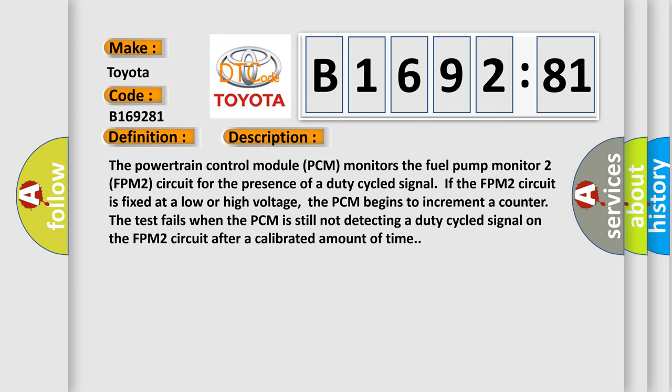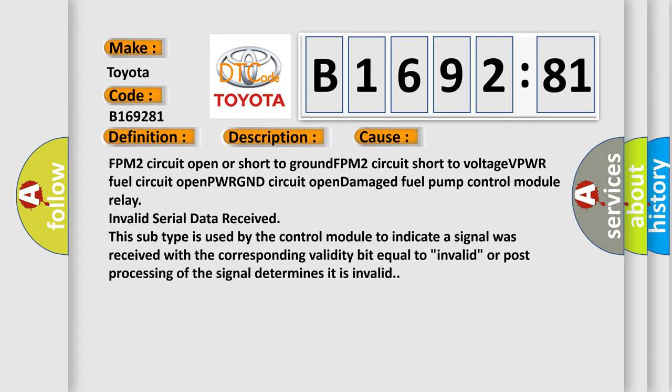The powertrain control module (PCM) monitors the fuel pump monitor 2 (FPM2) circuit for the presence of a duty cycled signal. If the FPM2 circuit is fixed at a low or high voltage, the PCM begins to increment a counter. The test fails when the PCM is still not detecting a duty cycled signal on the FPM2 circuit after a calibrated amount of time.